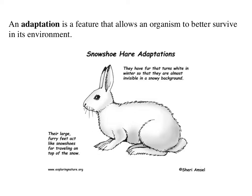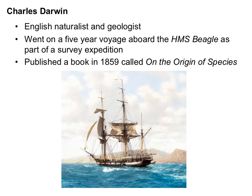An adaptation is a variation that is beneficial — a feature that allows an organism to better survive in its environment. An example is this snowshoe hare that has fur that turns white in the winter to blend into the snow, and large furry feet that act like snowshoes so it can travel easily through the snow.